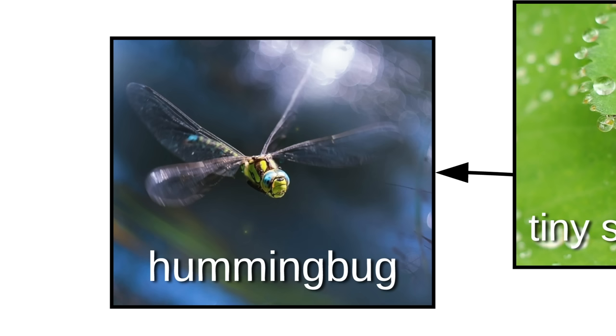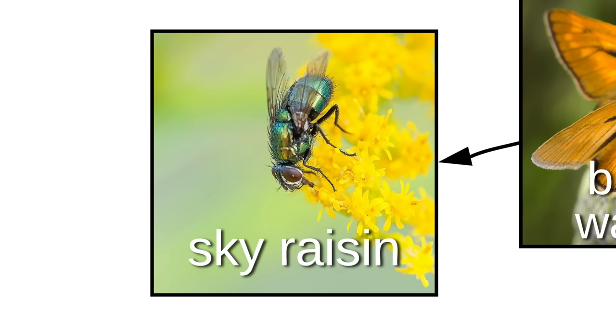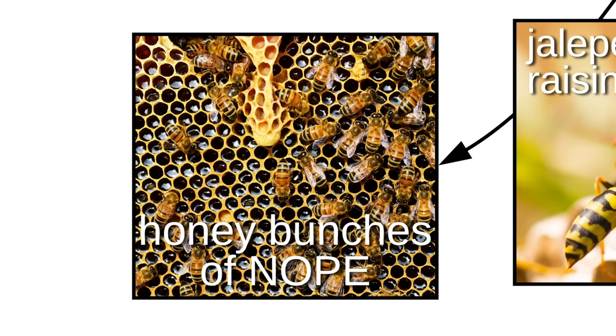There's a bajillion bugs, and some of them can fly, like the Tiny Strawberry, Humming Bug, and the Butterfly Wannabe. There's also the Sky Raisin, Jalapeno Sky Raisin, and this is called Honey Bunches of Nope.